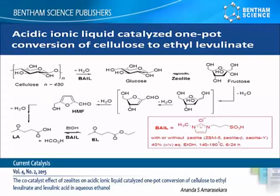A series of reactions are involved in this process as shown here. First, cellulose is depolymerized to glucose, which is isomerized to fructose with a zeolite co-catalyst.